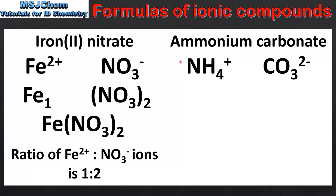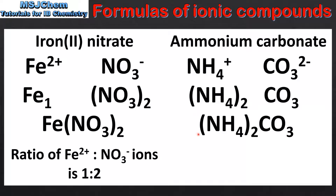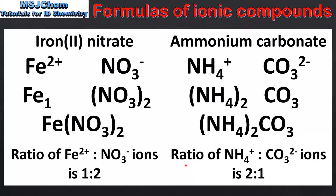Next is ammonium carbonate, composed of ammonium ions and carbonate ions. Using the crossover technique we take the 2 from the carbonate ion and write it as a subscript for the ammonium ion. Once again note the use of brackets. We then write it as a formula which is (NH₄)₂CO₃. In a formula unit the ratio of ammonium ions to carbonate ions is 2 to 1.